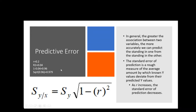Now let's look at how that changes with a stronger correlation. Let's say we're using exam 2 to predict exam 3 test scores, and the correlation is 0.9. If I square 0.9, that gives 0.81. Then 1 minus 0.81 gives 0.19. The square root of 0.19 is 0.436 — almost half.